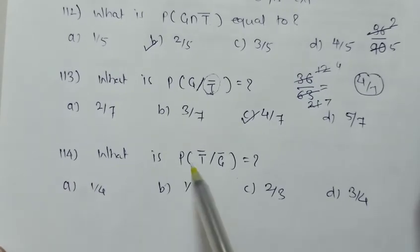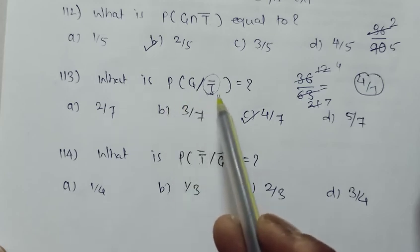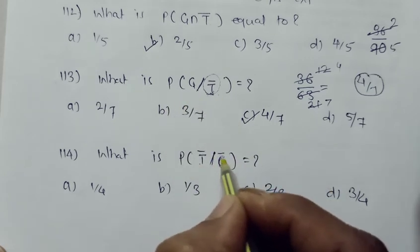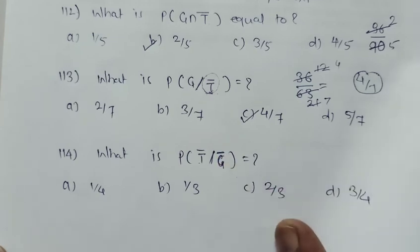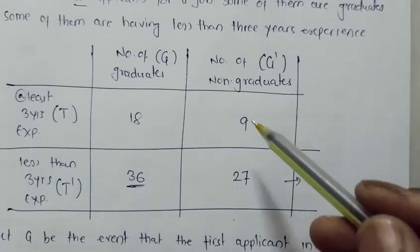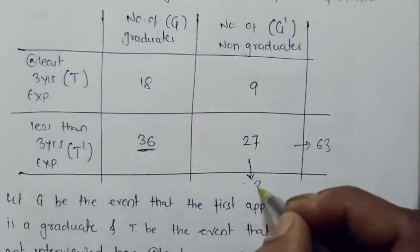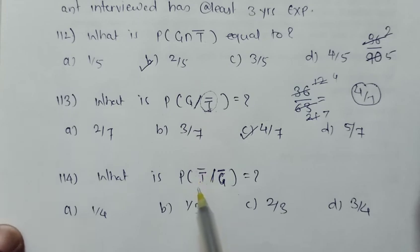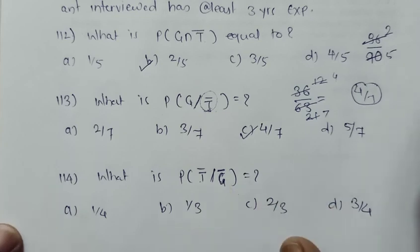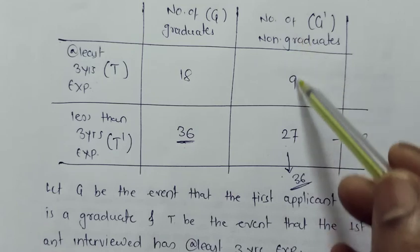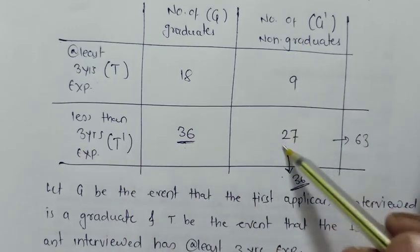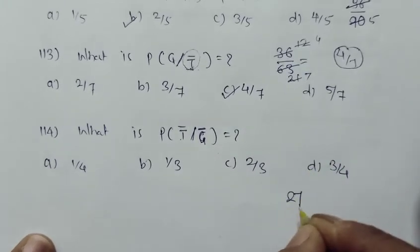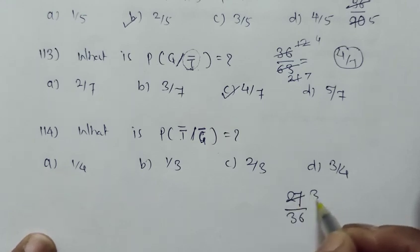The last question: what is P(T dash given G dash)? Similarly, G dash in the denominator means this event has already happened. G dash means a non-graduate student is selected. So how many non-graduate students are there? 9 plus 27 gives 36 non-graduate students. Out of these 36, they want T dash. So what is the probability of selecting a T dash student out of 36? T dash students here are 27, having less than 3 years experience, out of 36. So the answer is 27 divided by 36, which gives 3 by 4.